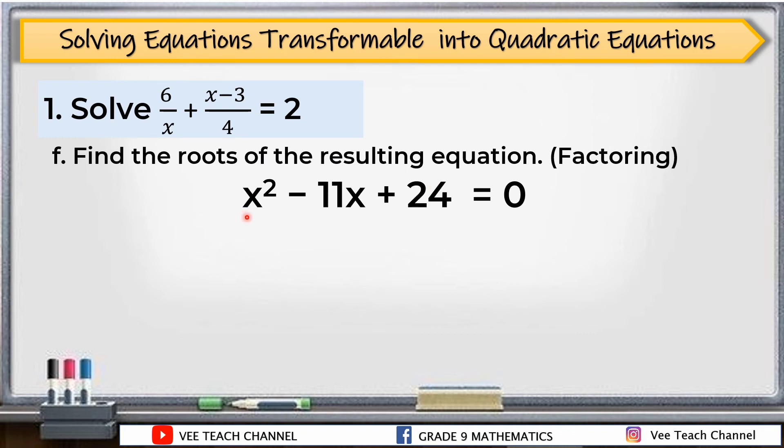Therefore, we can now find the roots of the resulting equation. We can use any of the four methods: extracting square roots, quadratic formula, completing the square, or factoring. But the easiest way to solve this is by factoring. We need factors of 24 that, when added, give -11. That is -8 and -3, since -8 × -3 = 24 and -8 + (-3) = -11.